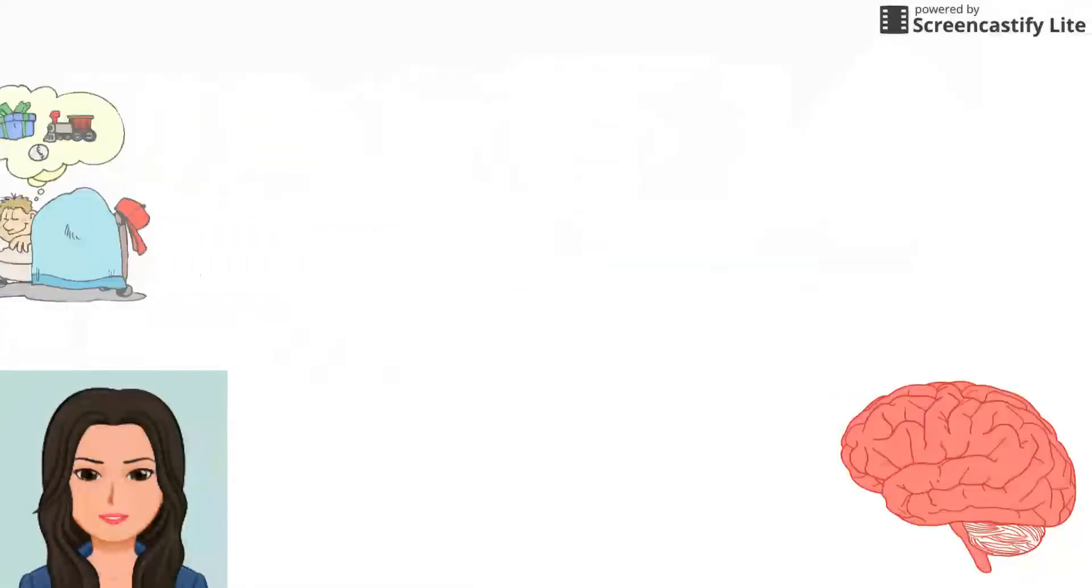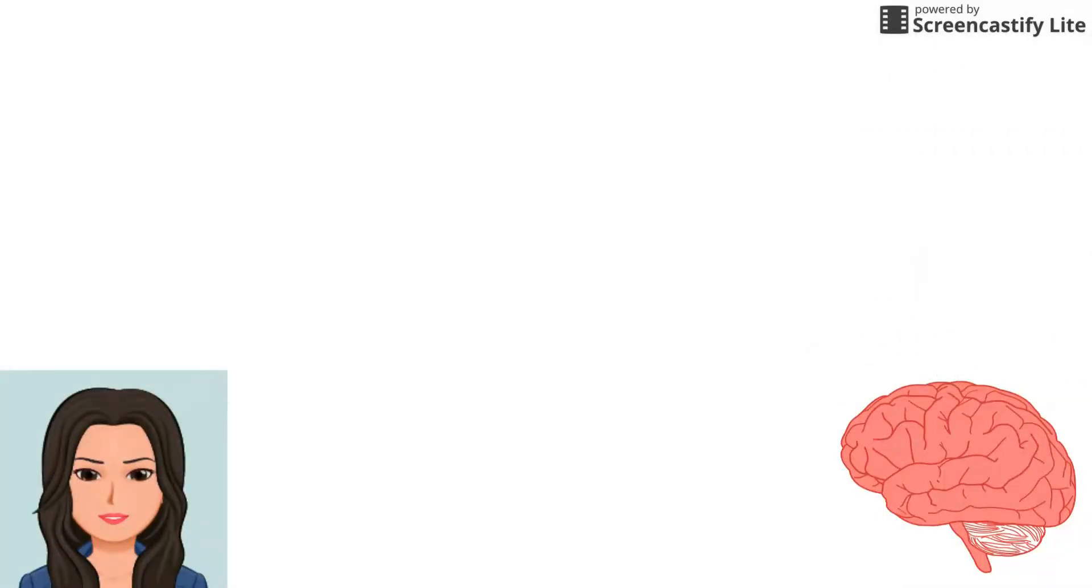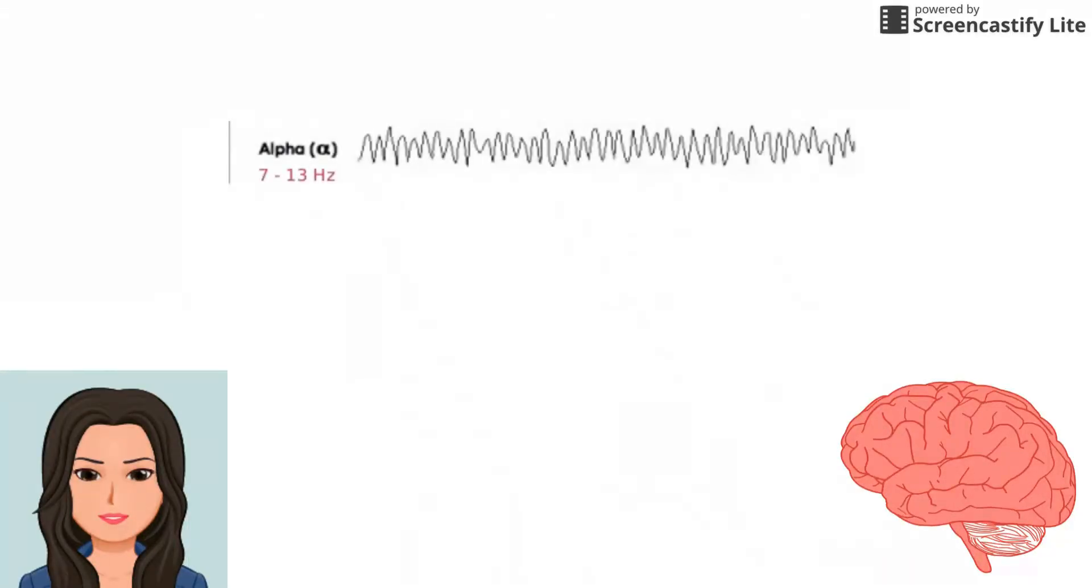If a doctor were to monitor your brain's electrical impulses with an electroencephalogram or EEG, they'd see that your brain is emitting slow, synchronized signals called alpha waves and slightly stronger signals called theta waves.